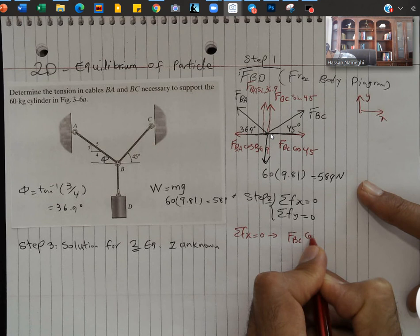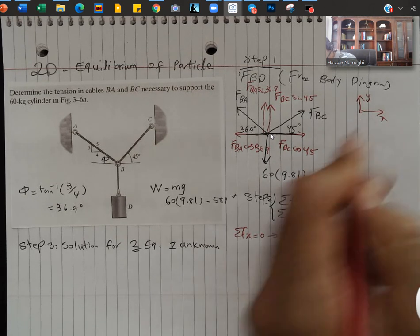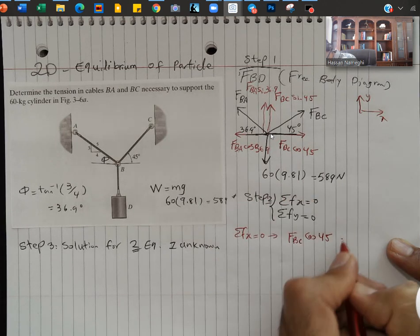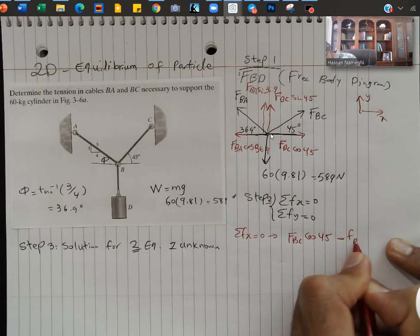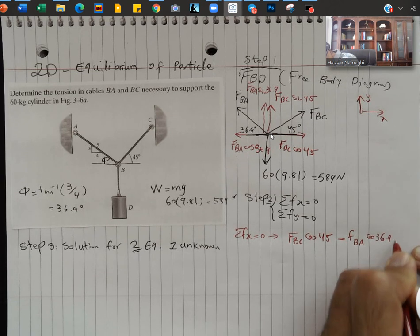FBC cosine 45. Again, this is to the positive X, the other one is pointing to the negative. So minus FBA cosine 36.9 equal to 0.